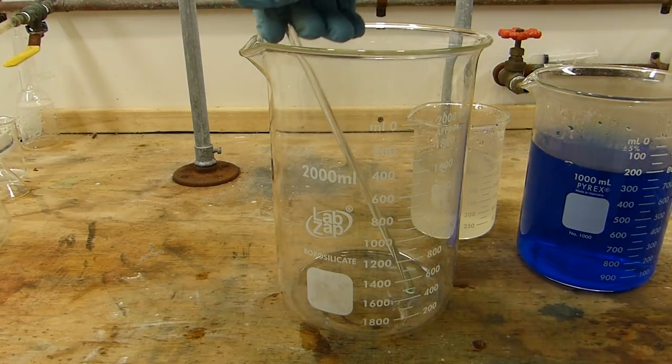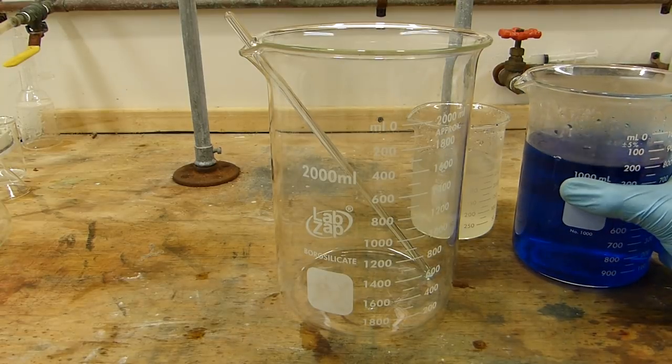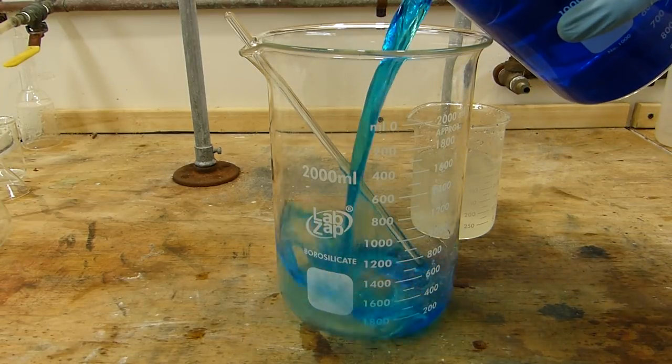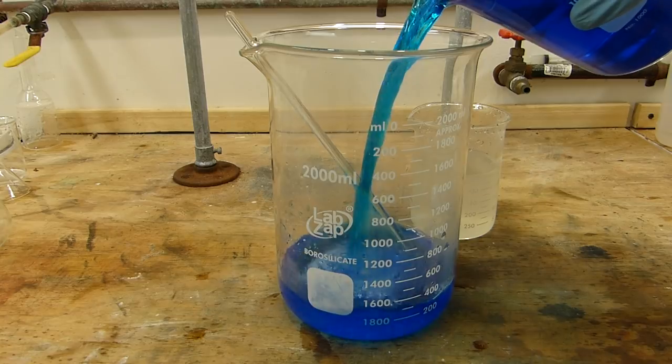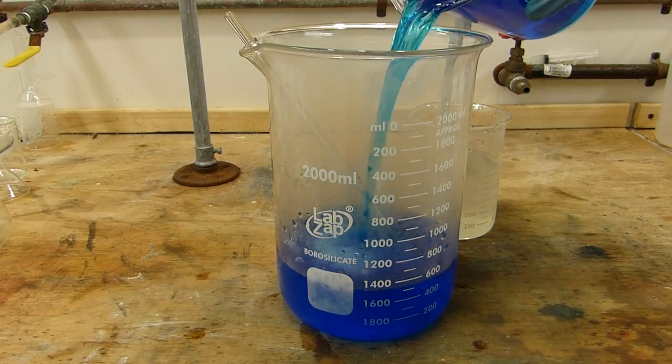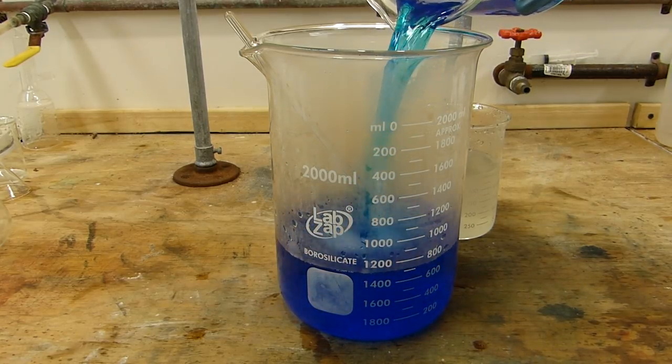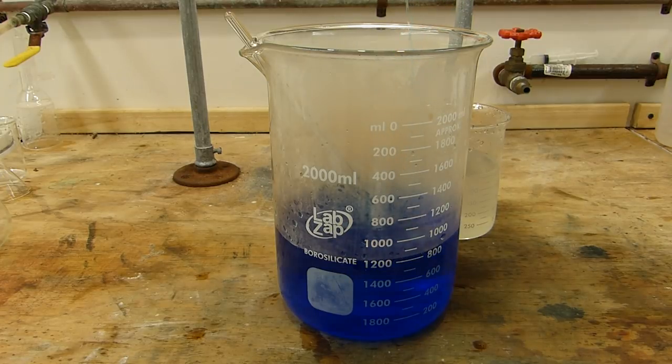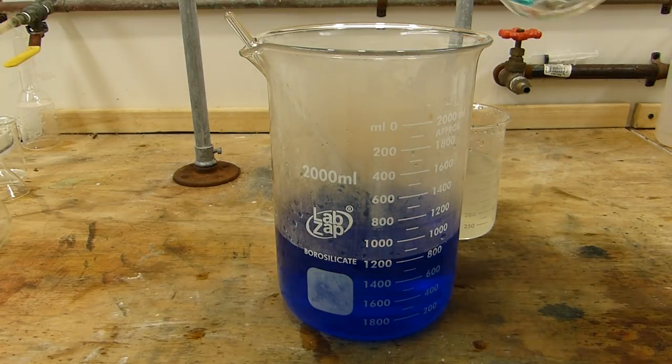I'm going to use this two-liter beaker here because this is quite a big reaction. I'll first pour the copper sulfate solution into this beaker. Great color. There we go.